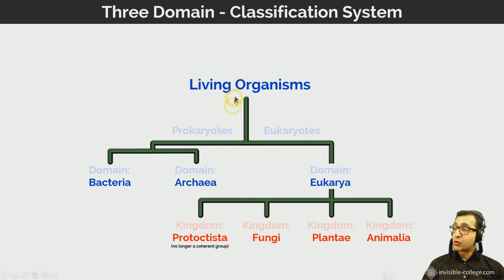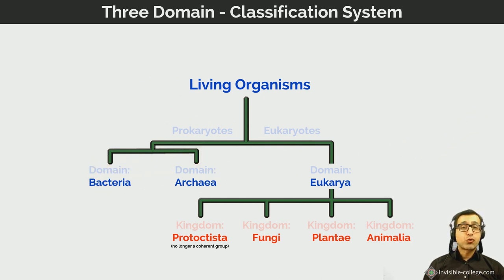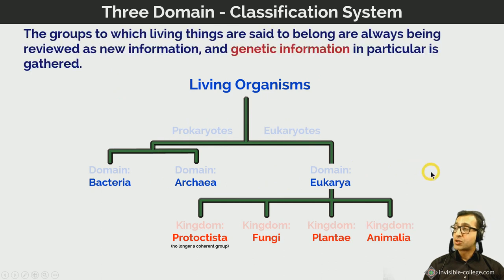What better way to classify things into groups than fundamentally on the basis of the building blocks that make them up? The cells that make up eukaryotic organisms have quite different features from the cells that make up prokaryotic organisms like bacteria and archaea. In the old days we only divided things into kingdoms, but as more genetic and structural information emerged, this three-domain system developed — with the Eukarya divided into kingdoms.